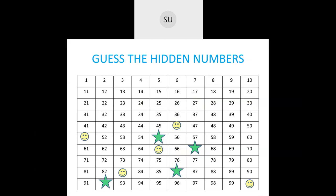Then we have 31, 32, 33, 34, 35, 36, 37, 38, 39, 40. So these are the numbers from 1 to 100. After 50 we have 51, after 54 we have 55. What is the number after 64? It is 65. Then after 66 we have 67. After 82 you have 83, after 85 we have 86, after 91 we have 92, and after 99 you have 100.